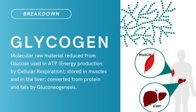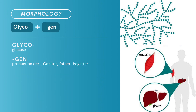Compound term: glycogen. Brief definition: molecular raw material derived from glucose, used in ATP energy production by cellular respiration. Stored in the muscles and in the liver, converted from protein and fats by gluconeogenesis. Term morphology: compound of glyco plus gen. Glyco means glucose. Gen means production.